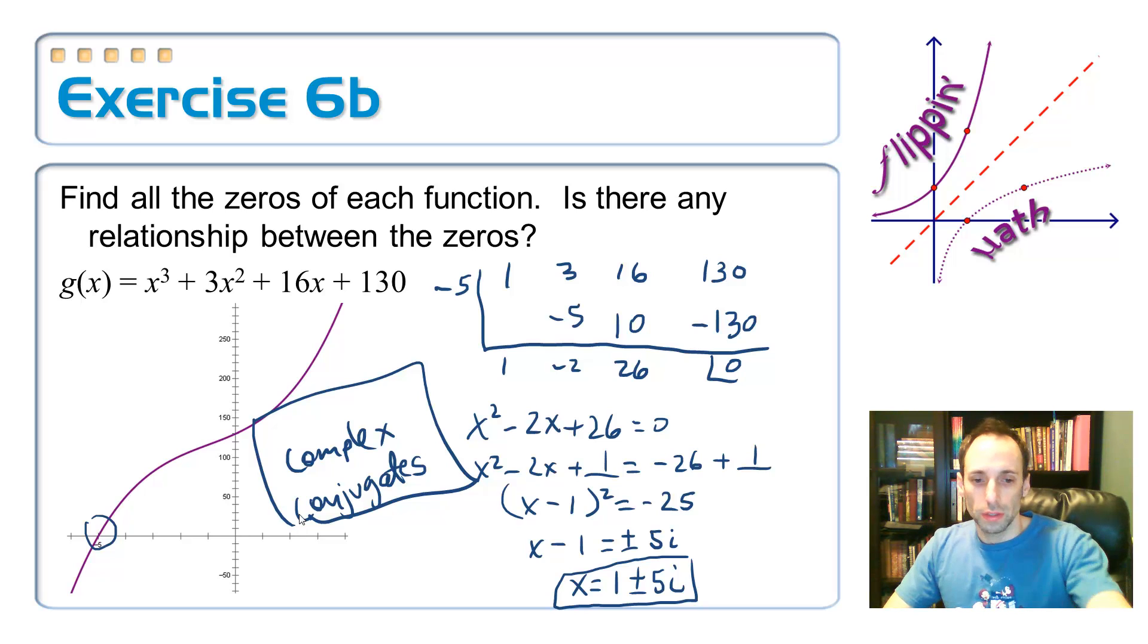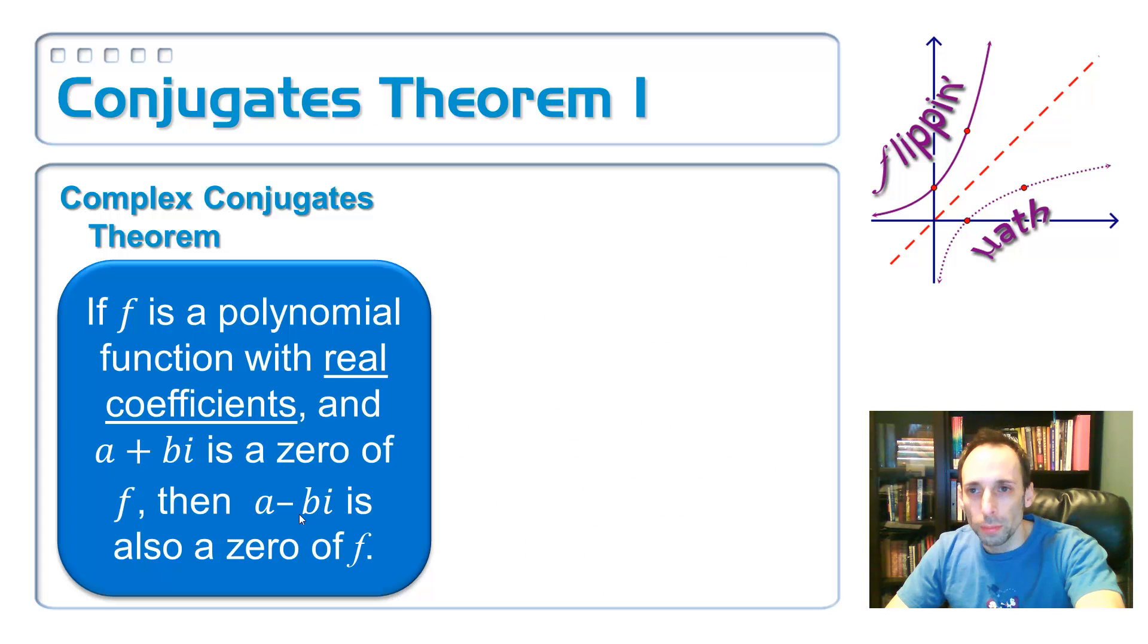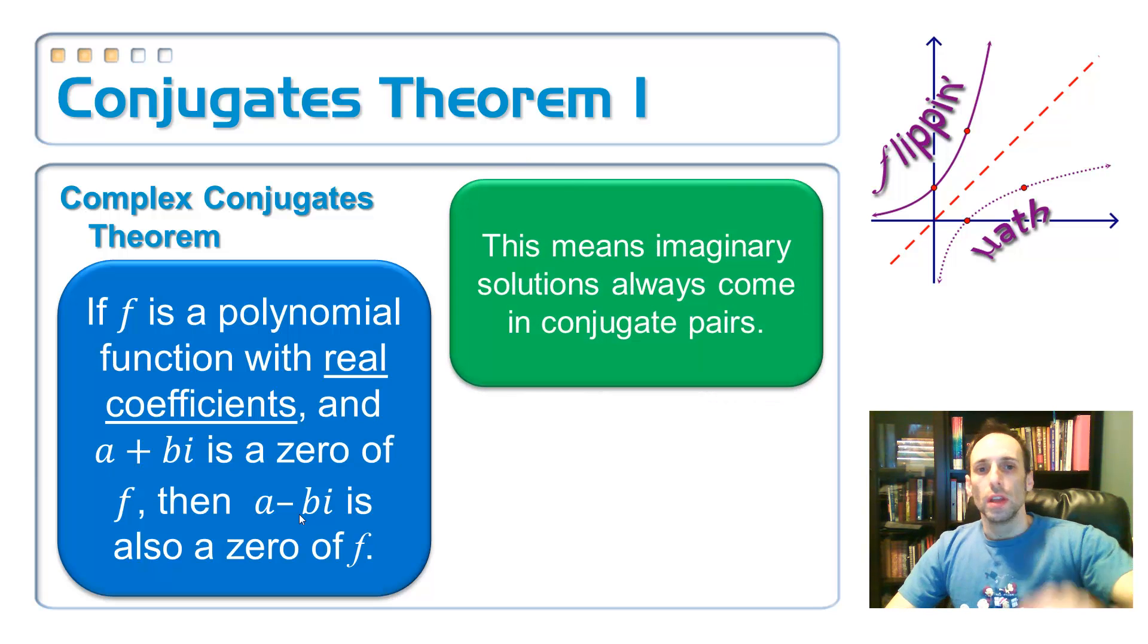So putting these two together, we've kind of seen this stuff before. But now we're formalizing it with some theorems. First conjugate theorem is polynomial function that has real coefficients. This is an important part. If it has imaginary coefficients, this thing does not apply. But if it has real coefficients, then if one of your solutions is a plus bi, then another one has to be a minus bi. This means that imaginary solutions always come in pairs. They come two at a time. Every single time, that's what the theorem is saying.